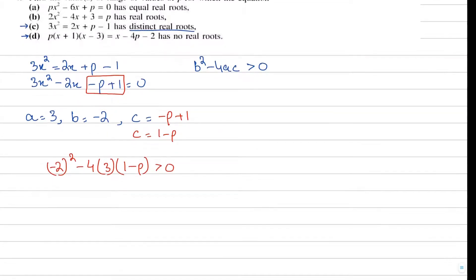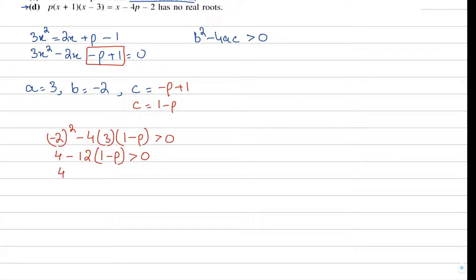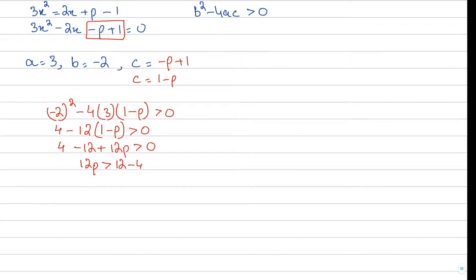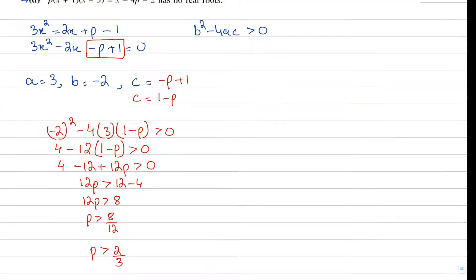Now let's plug in the values in the discriminant. Minus 2 squared minus 4 times 3 times 1 minus p, and set this greater than zero. So 4 minus 12 times 1 minus p is greater than zero. Let's break the steps: 4 minus 12 plus 12p is greater than zero. 12p minus 8 is greater than zero, so 12p is greater than 8.